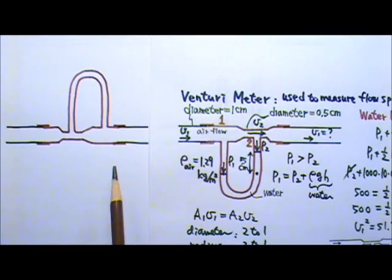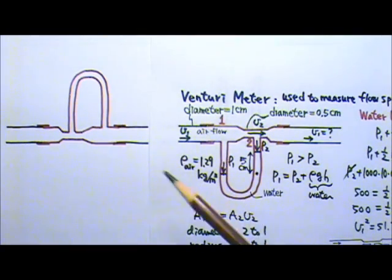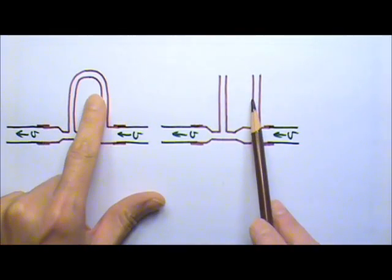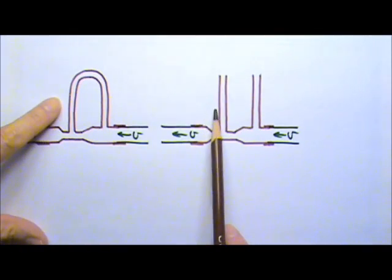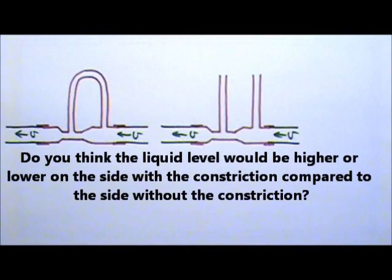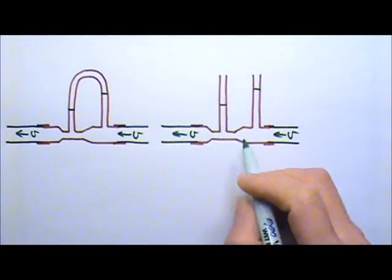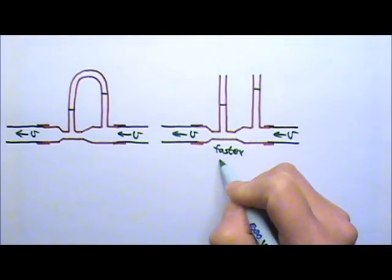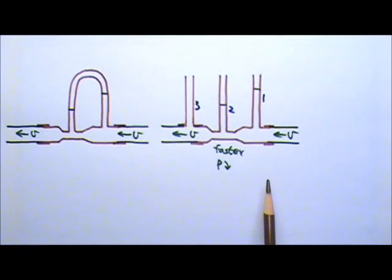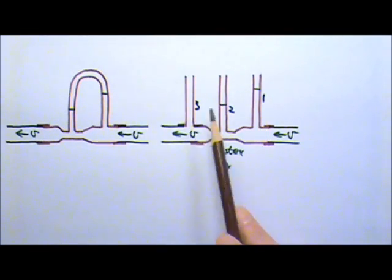To use a venturi meter to measure the flow speed of a liquid in a pipe, we just have to flip the meter upside down, with or without the top part. The flowing liquid down here can send the liquid up these tubes. Do you think the liquid level would be higher or lower on the side with the constriction compared to the side without the constriction? It would be lower at the constriction. Because at the constriction, the flow speed is faster, meaning the pressure is lower. The lower pressure doesn't push liquid up as high. Before I show you a demonstration of this, I want to ask you one more question. The venturi meter I will be using has a third tube coming out of here. If the water flow goes from right to left, which of the two water columns will be taller, one or three?